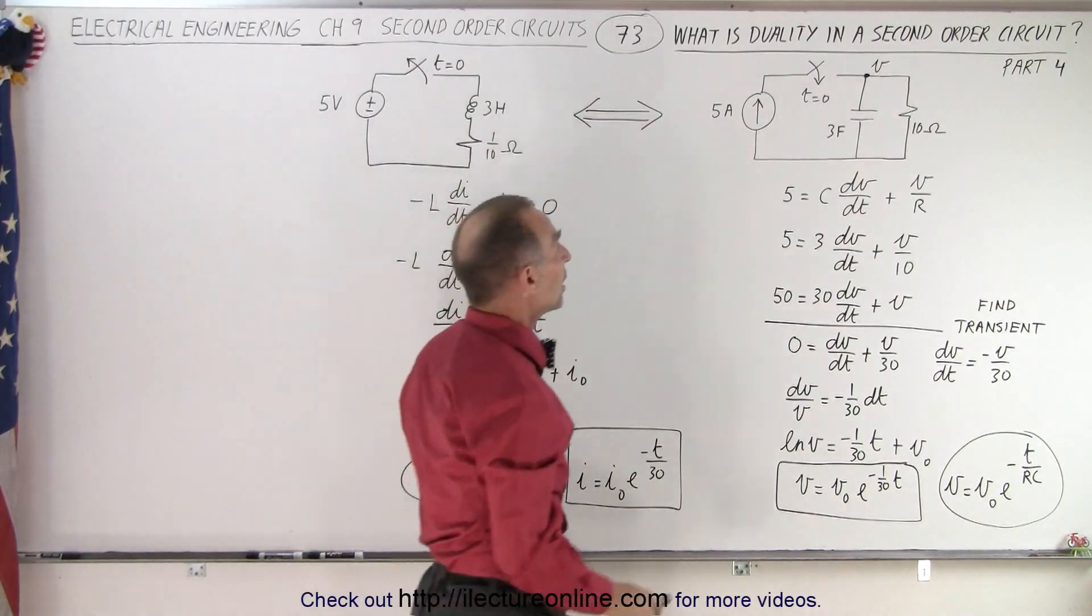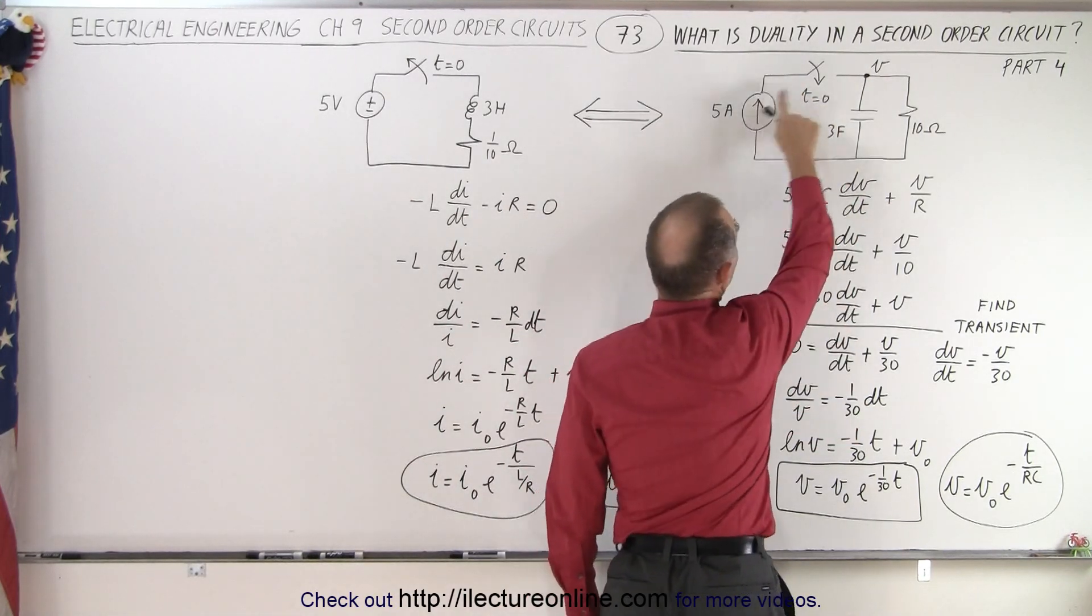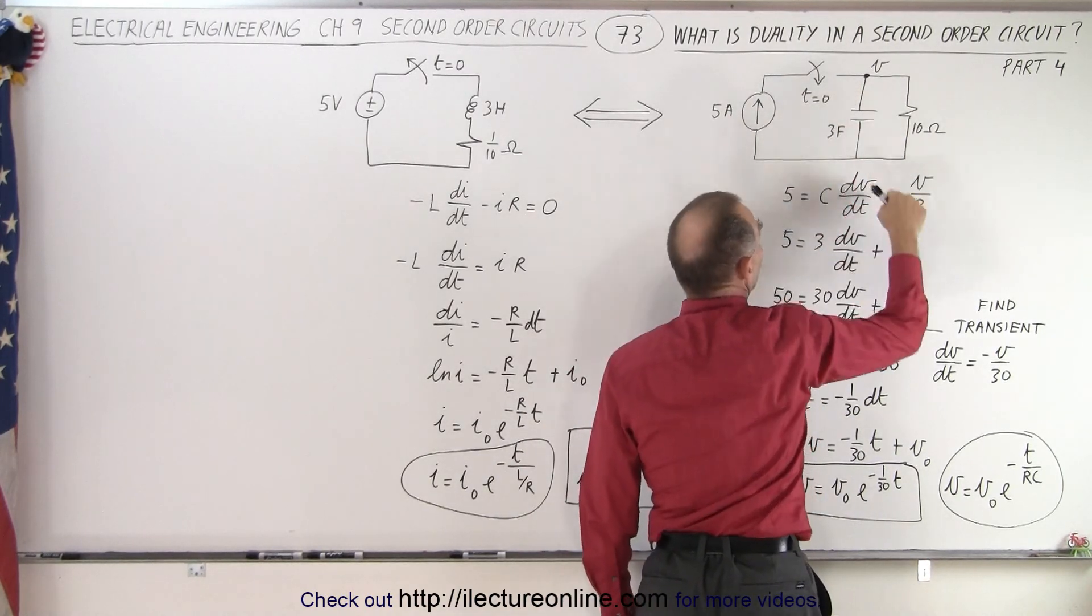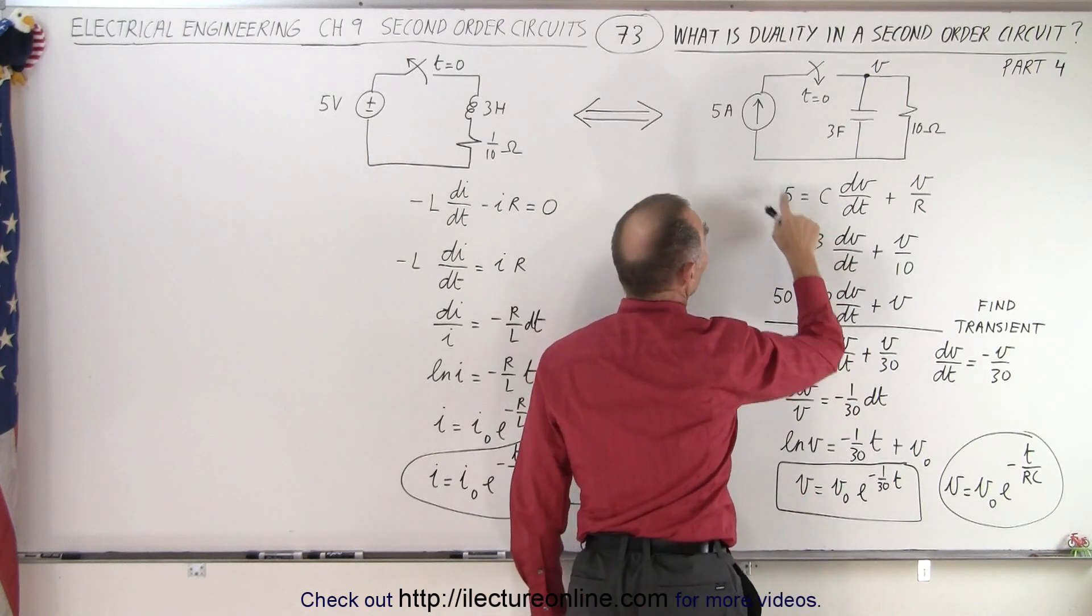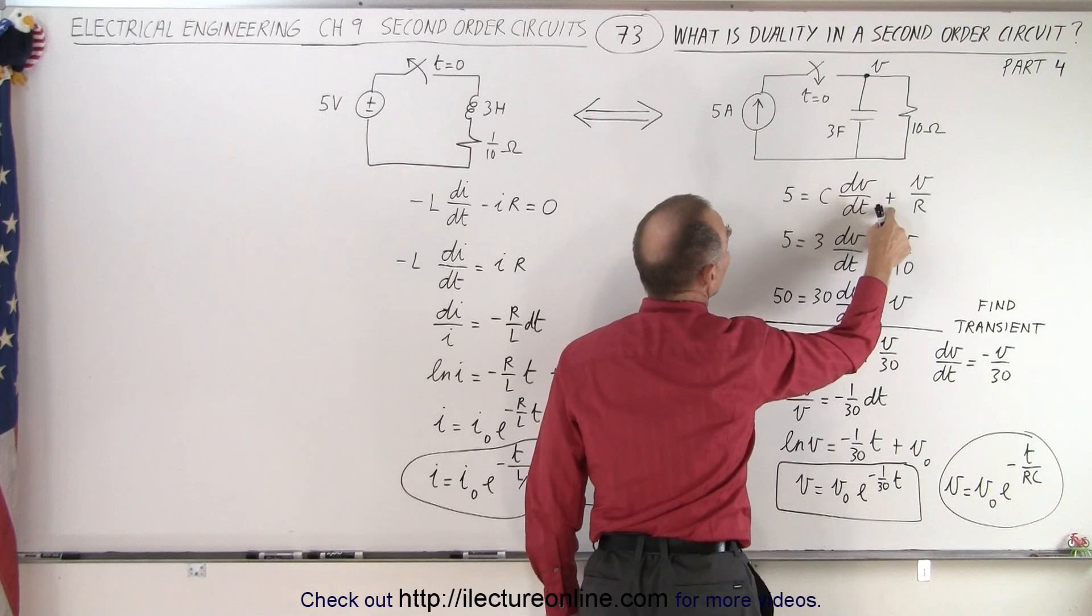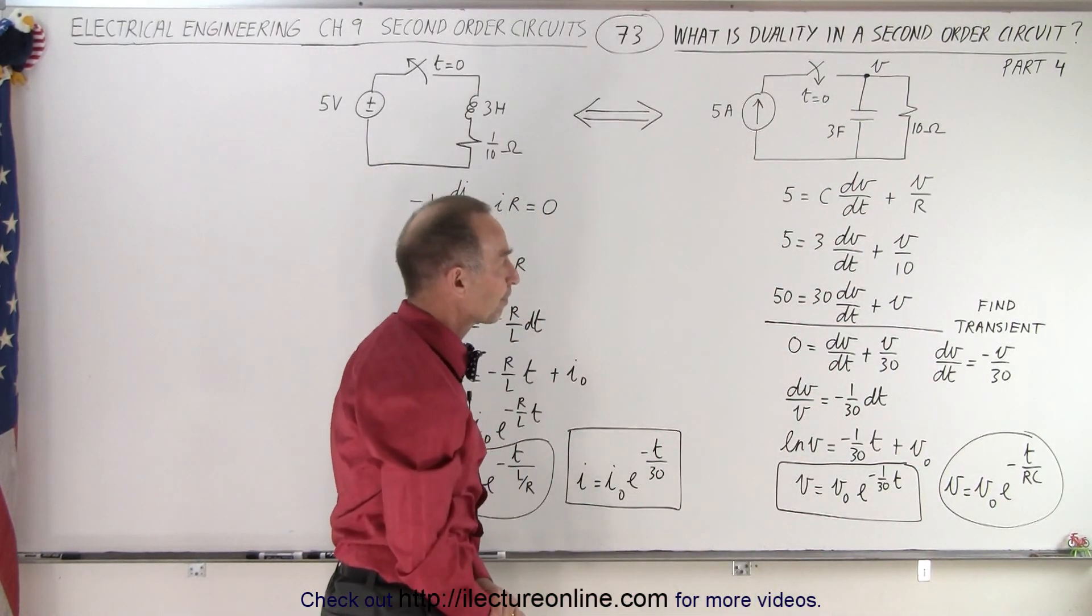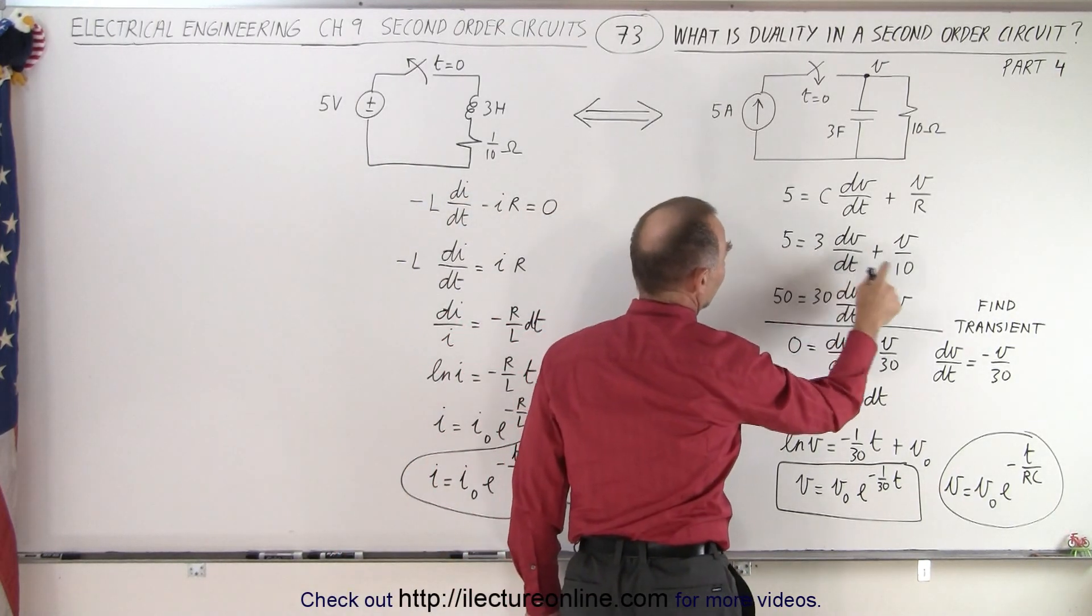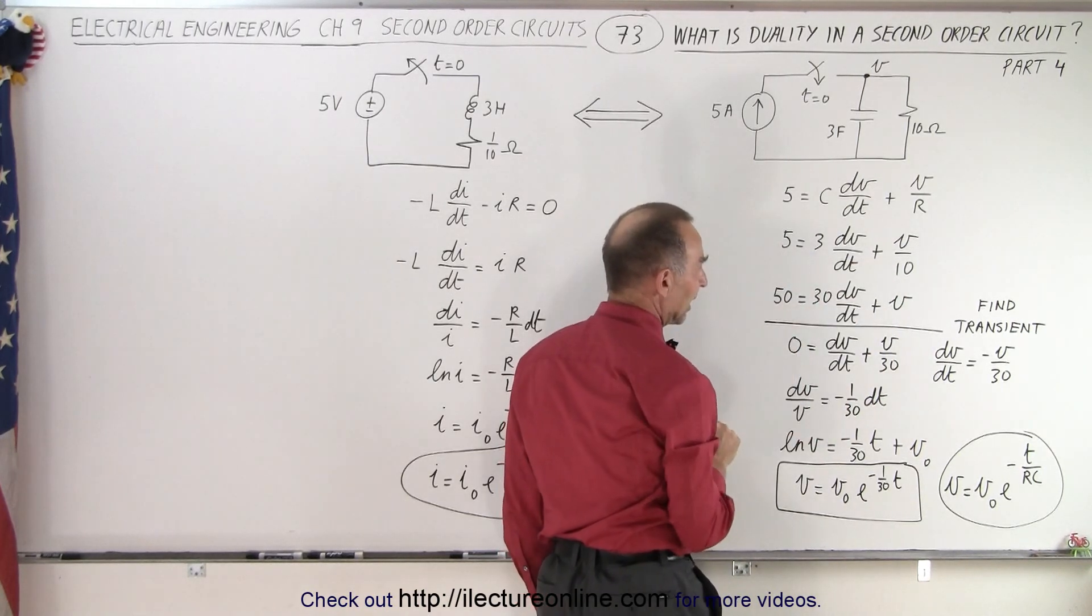Coming up with the equation for this circuit when the switch closes, we have the current going into the node equals the current flowing out of the node through the capacitor and the current flowing out through the resistor. So we have 5 amps going in times the capacitance times dv/dt plus the voltage over the resistance. Notice that if you plug in the values - 3 for the capacitor and 10 for the resistor - and we simplify the equation by multiplying everything by 10,